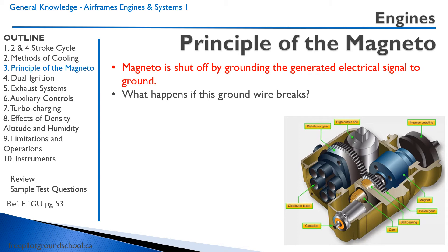This is a very important principle of the magneto that you need to be aware of — it may come up on your written test, flight test, or whenever you're operating an aircraft. The magneto is shut off by grounding the electrical signal to the airframe so that no current can flow to the spark plug. So here's a question: what happens if the ground wire breaks? If the ground wire breaks, the magneto is no longer off, and if that propeller is turned, there is a possibility that a spark will be created — and if a spark is created, that engine could start or at least fire and turn over. It's quite a dangerous situation.